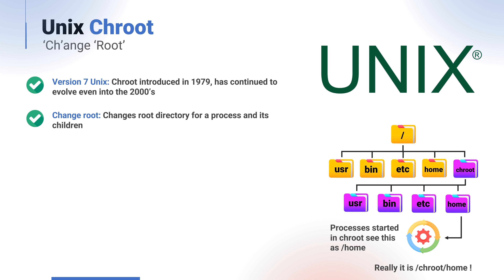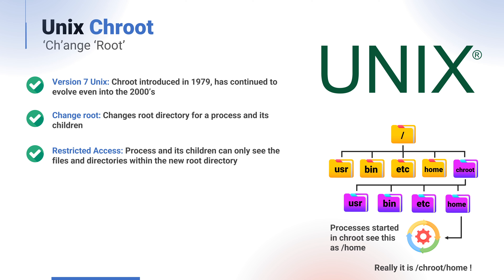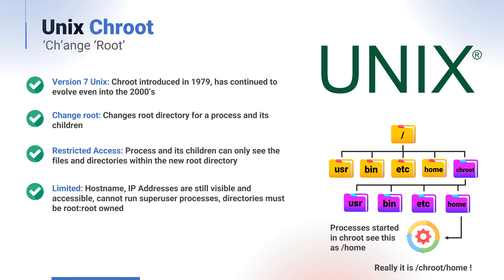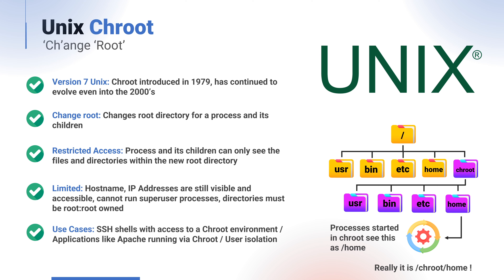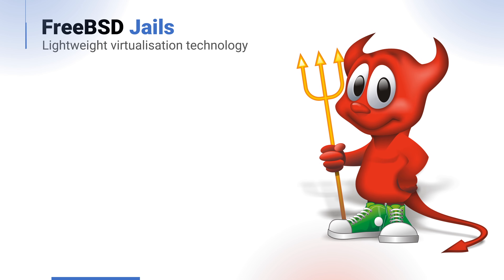During the mainframe era, the IBM mainframe CP-CMS operating system was a pioneering example of virtualization technology, dating back to the 1960s. This system allowed multiple users to access and run their own virtualized instances of the operating system on a single mainframe computer, essentially allowing the mainframe to be shared amongst multiple users. This is one of the first widely available virtual machine architectures in the world. Rather than timesharing resources, which was very common for that era, CP-CMS provided each user with their own operating system, virtualized within the machine.